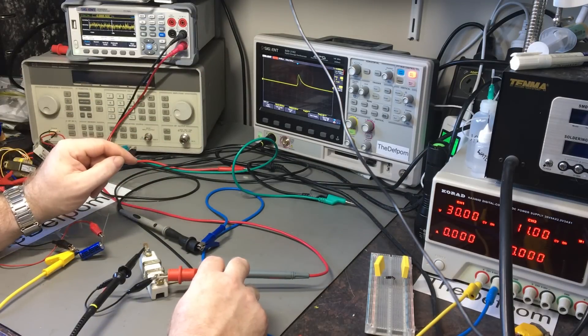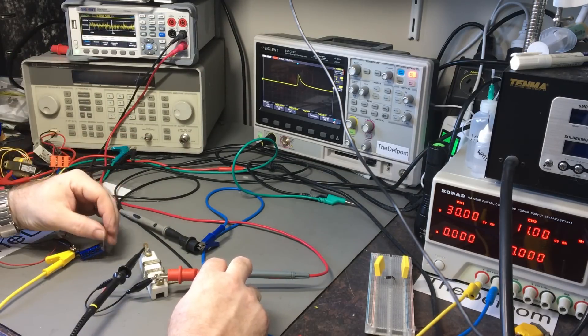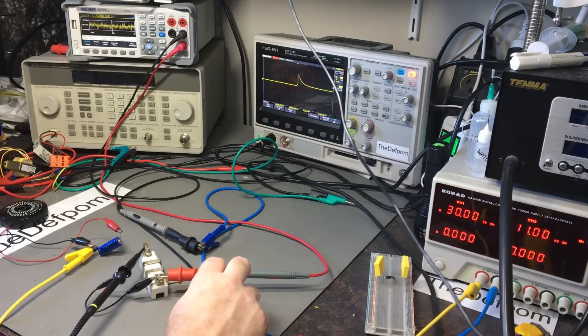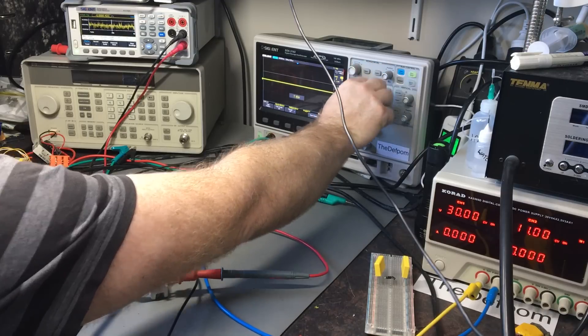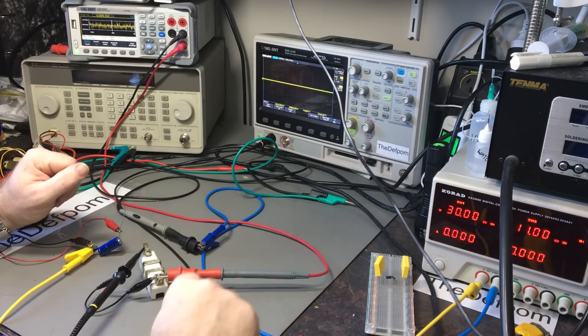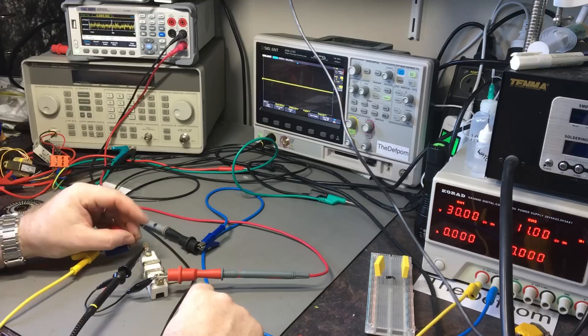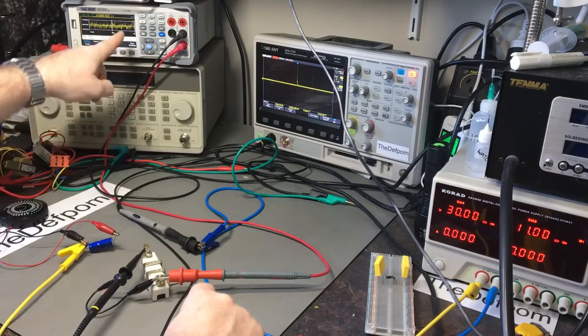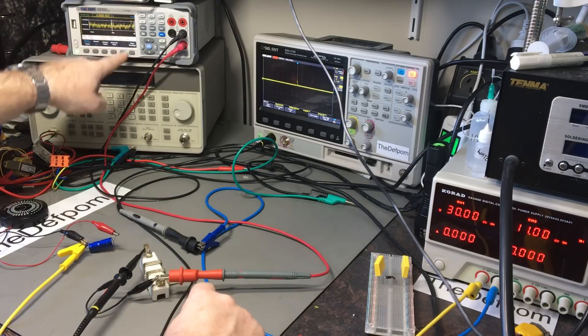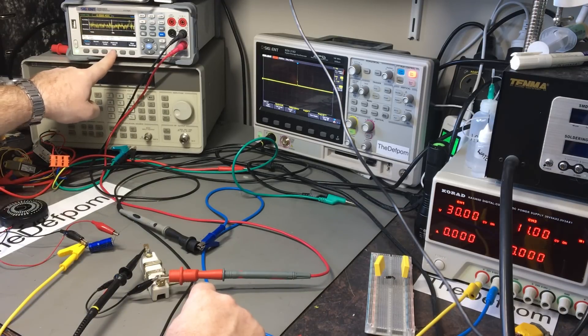This should also tell me as well, but this scope is going to be much faster to see the actual response. This may not be fast enough to see the spikes. I'm going to set this on single shot, bring the trigger level up a bit higher. That power supply is turned on. Let's touch the wire.